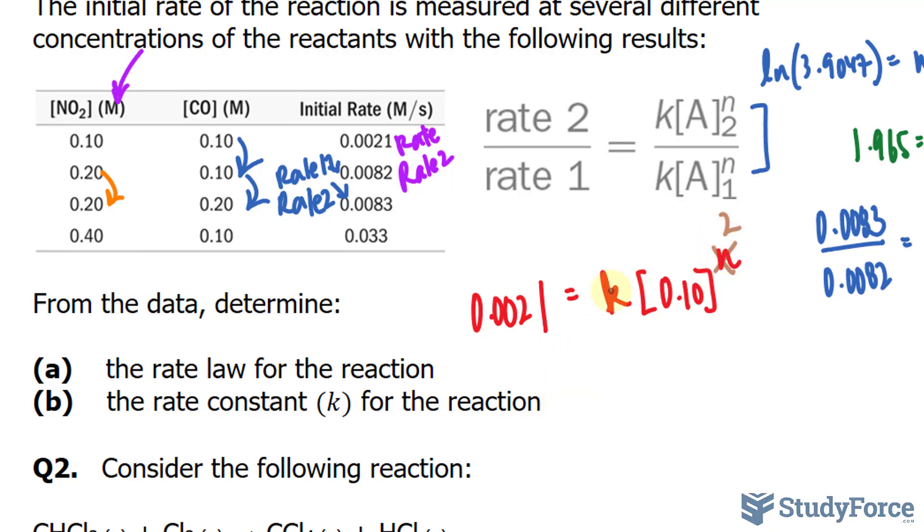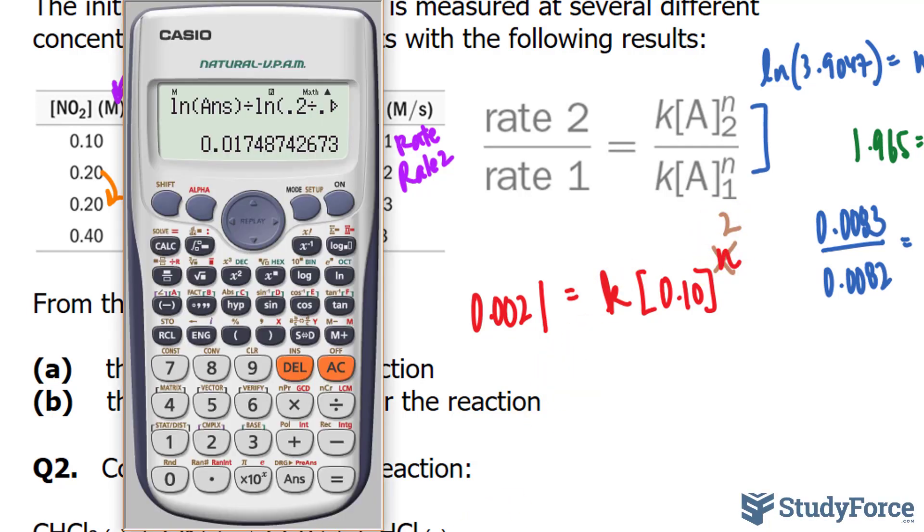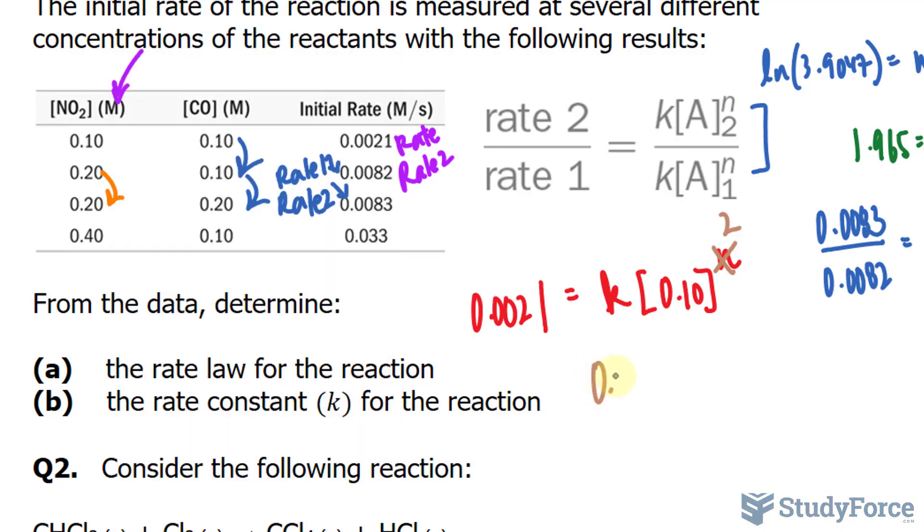So 0.10 raised to the power of 2, divide both sides by this factor. We end up with 0.0021 divided by the number that I just found, and we get a constant of 0.21.